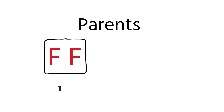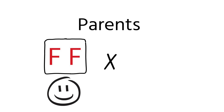We can use genetic diagrams to predict the genotypes and phenotypes of offspring produced when two parents are crossed together. The first type we're going to look at is what we'd call a monohybrid cross — a pretty basic cross. A monohybrid cross is where we're looking at the inheritance of a characteristic controlled by a single gene.